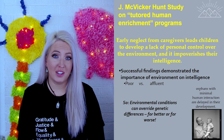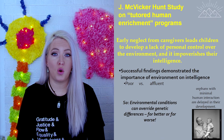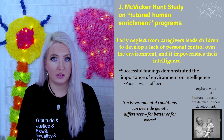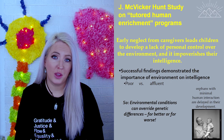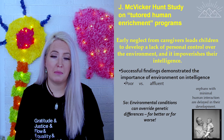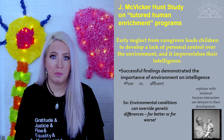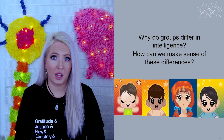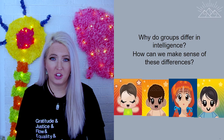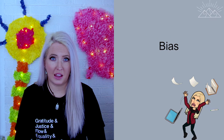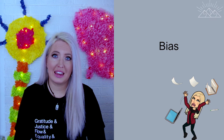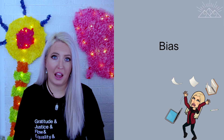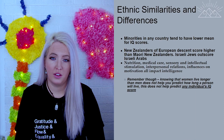Environmental conditions can actually override some of the genetic influence we see in intelligence. When it comes to bias, we do see some groups that score both differently and similarly on intelligence tests, and we need to make sense of that. Minorities in any country tend to have a lower mean IQ score — for example, New Zealanders of European descent score higher than Maori New Zealanders.